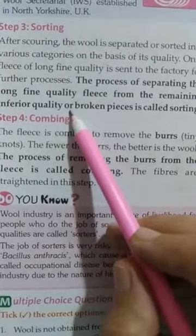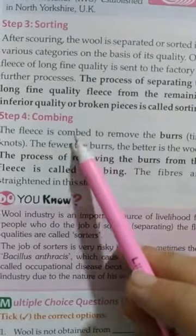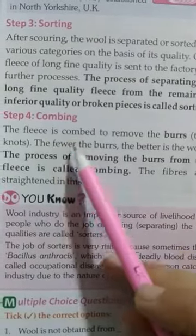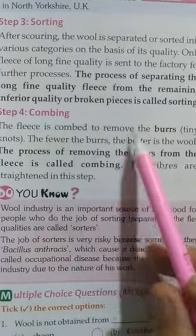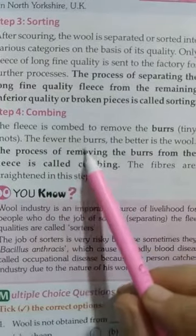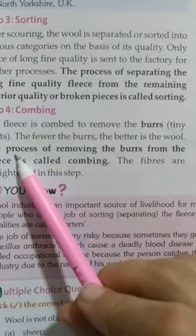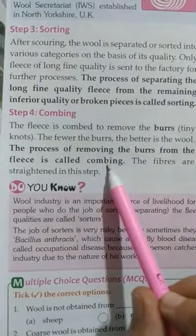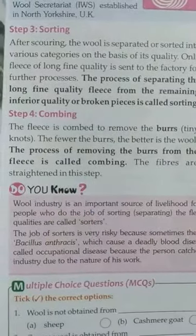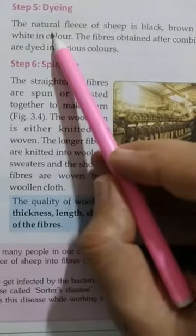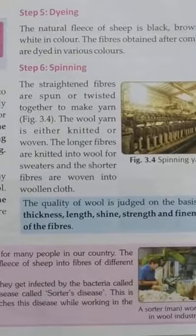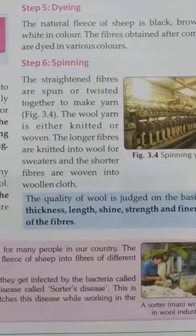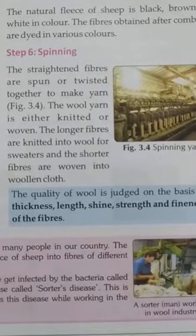Combing means removing burrs from the fleece. The fleece is combed to remove the burrs - tiny nodes. The fewer burrs in the fleece, the better the quality of wool. The process of removing burrs from the fleece is called combing, and the fibers are straightened in this step. After combing, dyeing takes place. The natural fleece of the sheep is black, brown, or white in color, so the fiber obtained after combing is dyed in various colors to get different colored fabric.